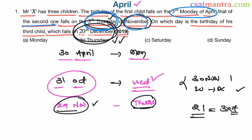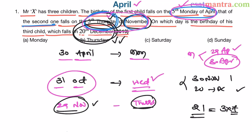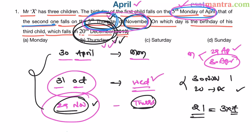The problem is not difficult at all, just slightly lengthy. Days are given and you have to find the dates. For the 5th Monday of April, there are 2 possibilities: 29th April or 30th April. When it is 29th April, you don't have 5 Thursdays in November, so that option is eliminated. With 30th April, you do have 5 Thursdays in November, so the 5th Thursday of November falls on 29th November. After that, you have 21 days to 20th December, so 20th December is Thursday.